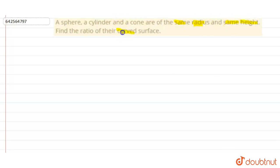We have to find the curved surface, so let's see our answer here. The radius of the cone, cylinder and sphere be R.